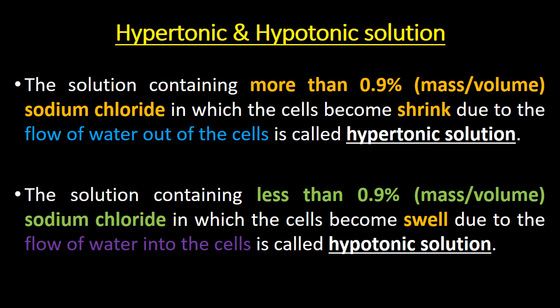Let us know about hypotonic and hypertonic solutions. A solution containing more than 0.9% sodium chloride, in which the cells shrink due to the flow of water out of the cells, is called a hypertonic solution.